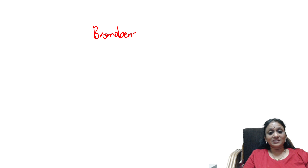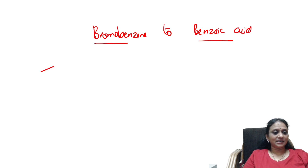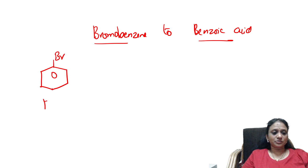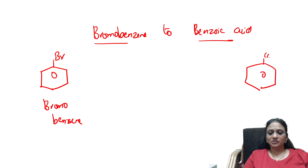If they ask for one more method to convert bromobenzene to benzoic acid, here is another easy and important method. Again, write the structure of the reactant bromobenzene and the name of the product benzoic acid, so it is easy for you to understand.